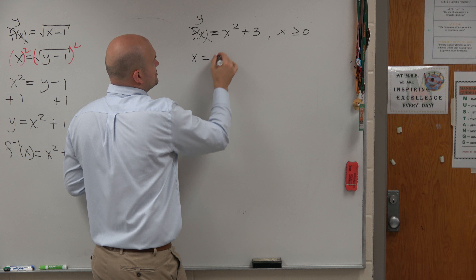Now we go ahead and solve. Subtract 3 from both sides: x minus 3 equals y squared. Now we've got to take the square root of both sides.